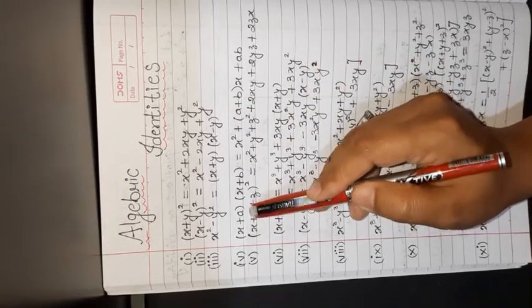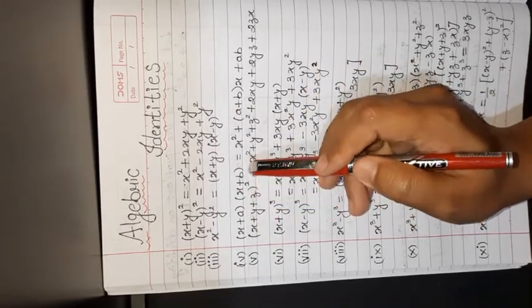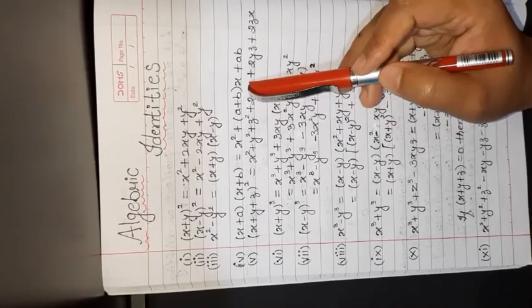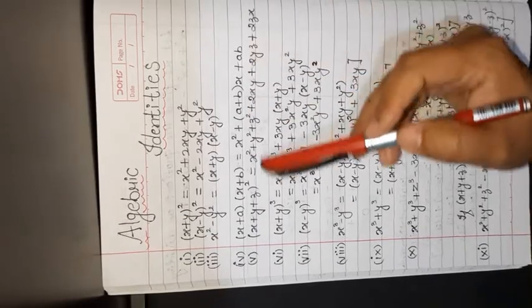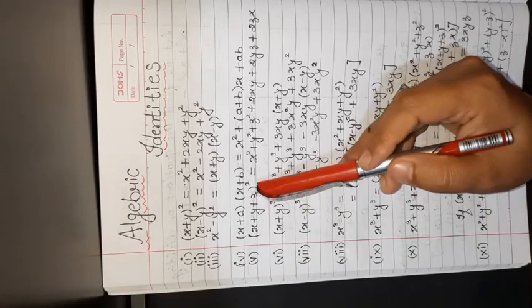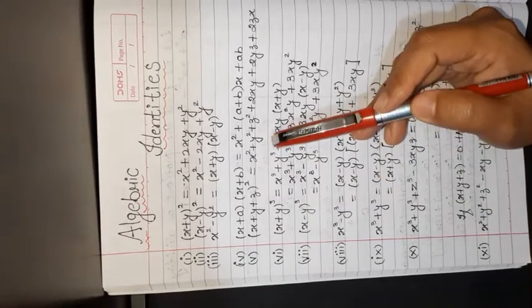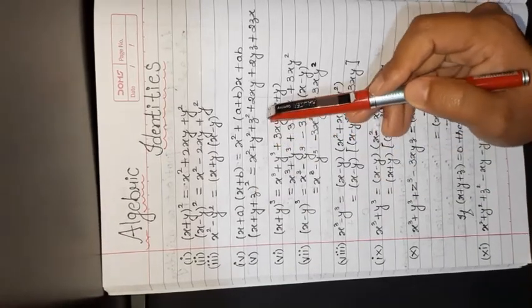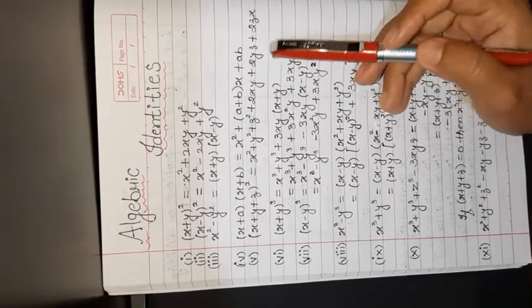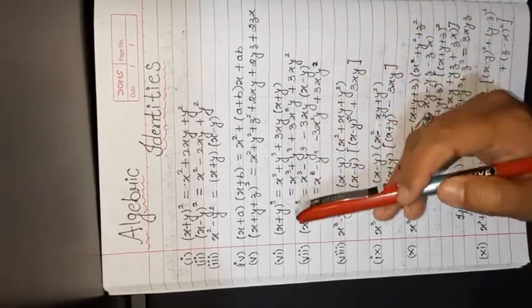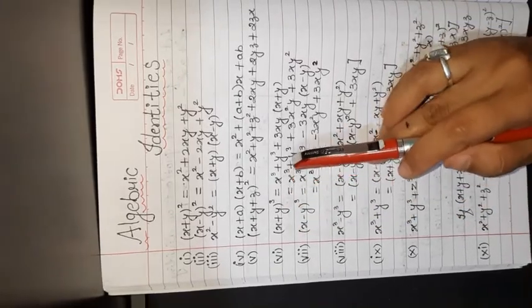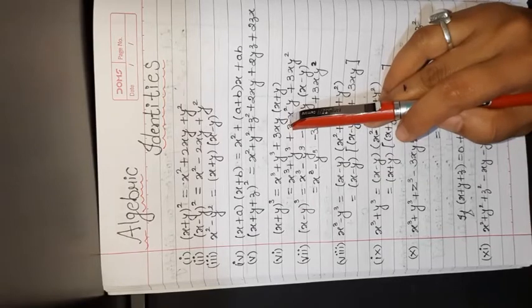Fourth, (x + a)(x + b) = x² + (a + b)x + ab. Fifth, (x + y + z)² = x² + y² + z² + 2xy + 2yz + 2zx. Sixth, (x + y)³ = x³ + y³ + 3xy(x + y).